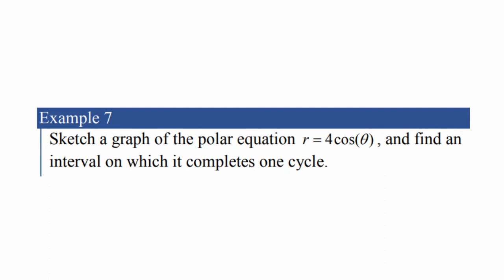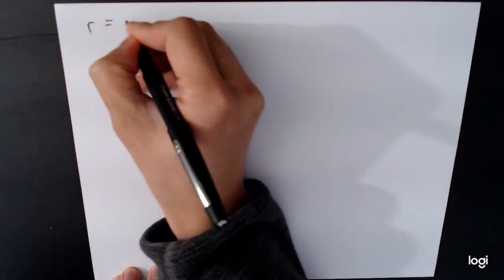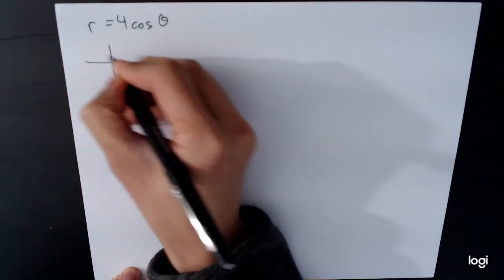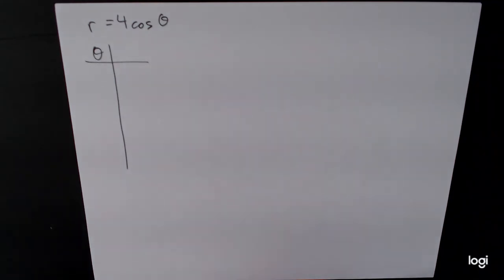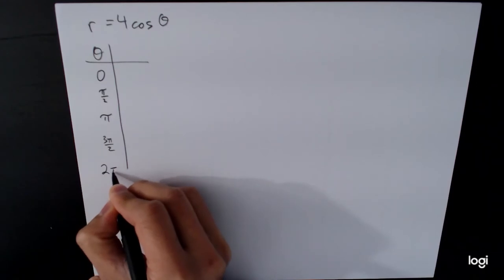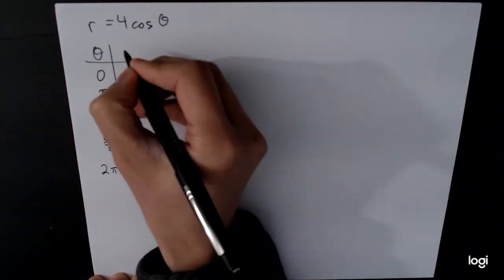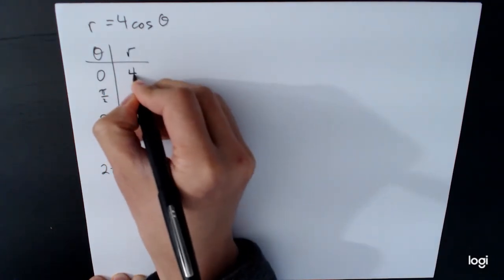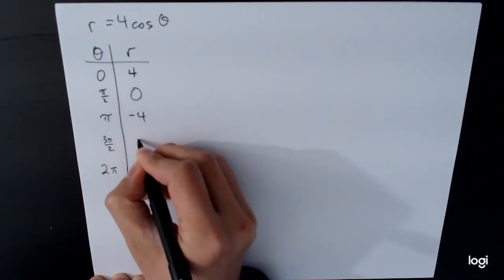Sketch a graph of the polar equation r equals 4 cos theta and find an interval on which it completes one cycle. So this problem has a lot more going on to it. So let's first of all start off by looking at our equation. r equals 4 cos theta. Now the value of theta that we're going to use for this problem is going to be the same values that we used for graphing when we had to use the key values. So in this case, there's not a lot of transformation. We're only multiplying by 4. So we can actually do this one mentally.